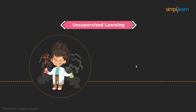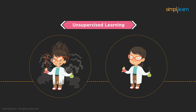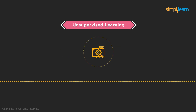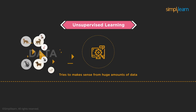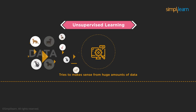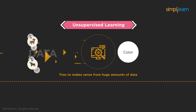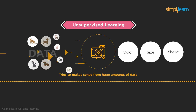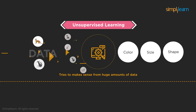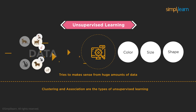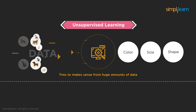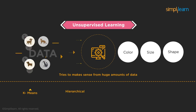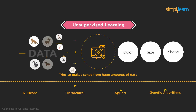In unsupervised learning, you don't really have a predetermined result in mind. Much like how a child explores the world on its own, the machine tries to make sense of things from huge amounts of data. Given many photos of animals, the machine starts segregating them by color, size, and shape — such an approach is known as unsupervised learning. Clustering and association are the types of unsupervised learning, covering algorithms such as k-means, hierarchical, a priori, and genetic algorithms.